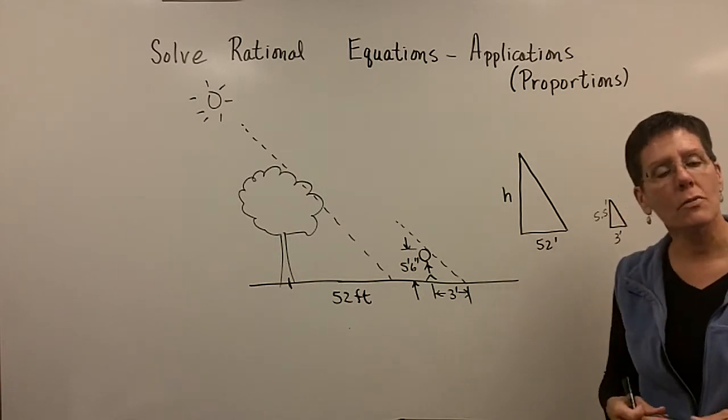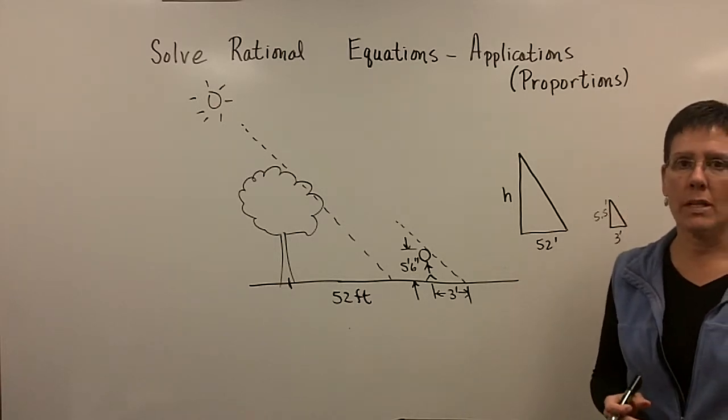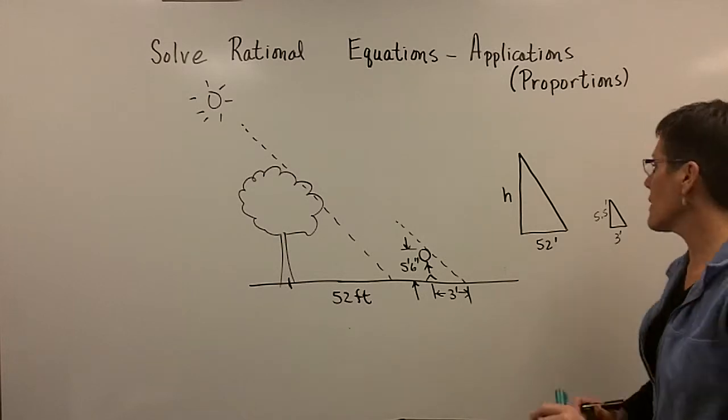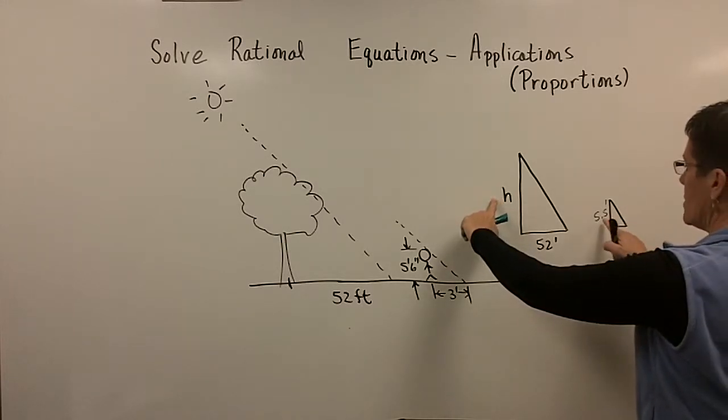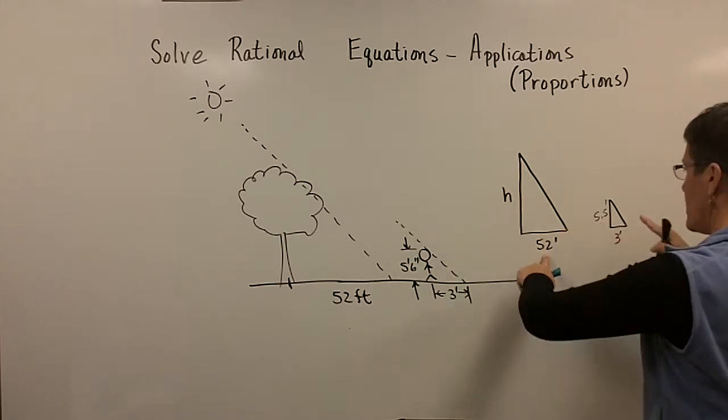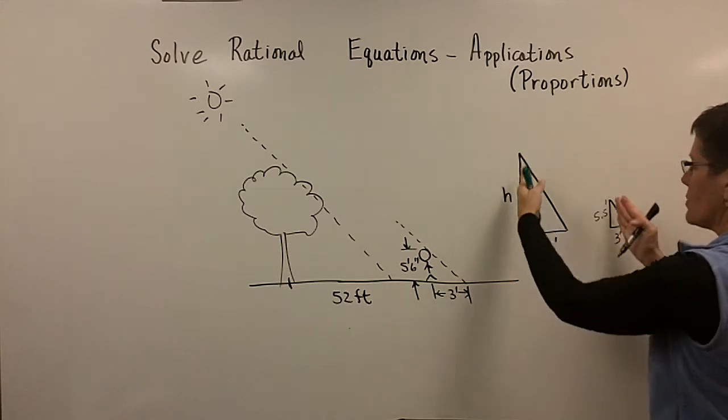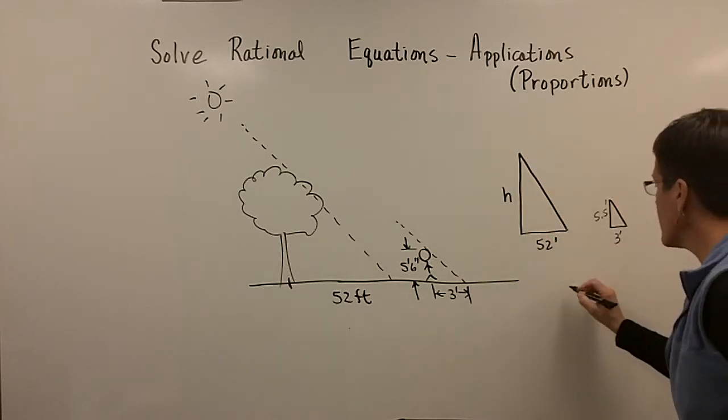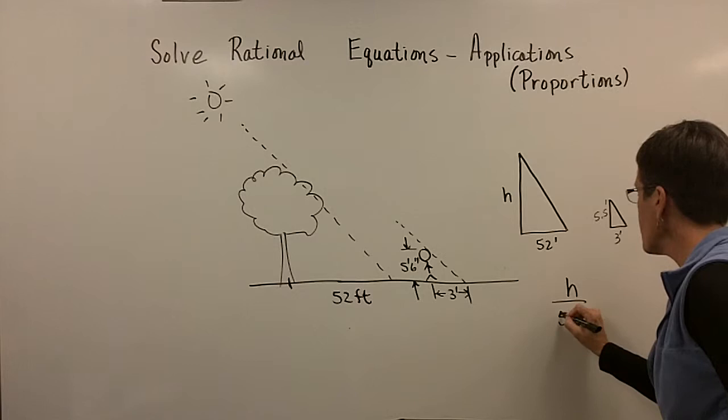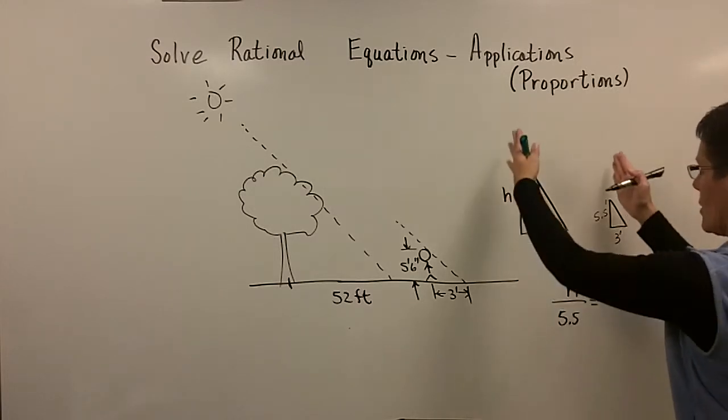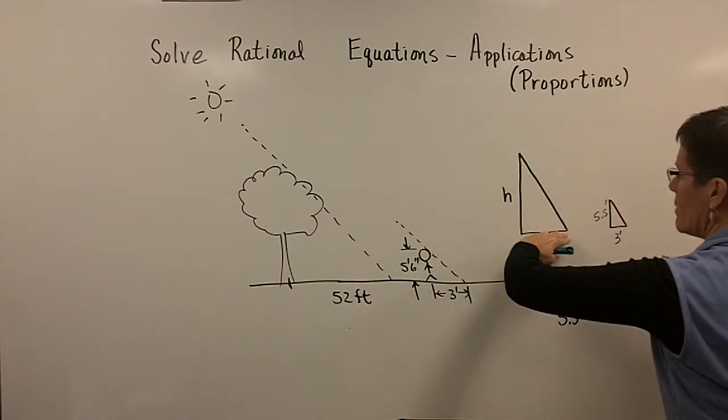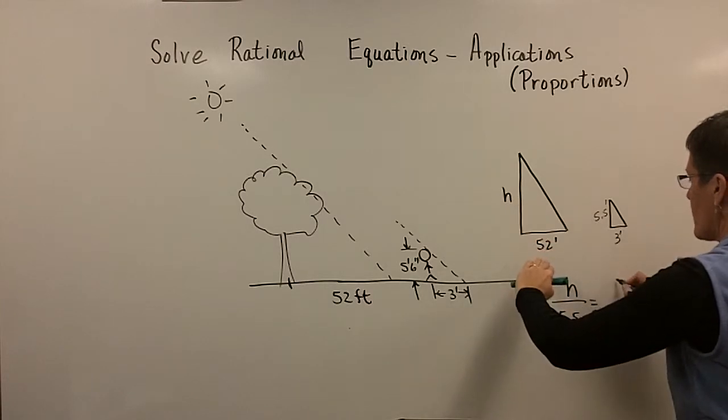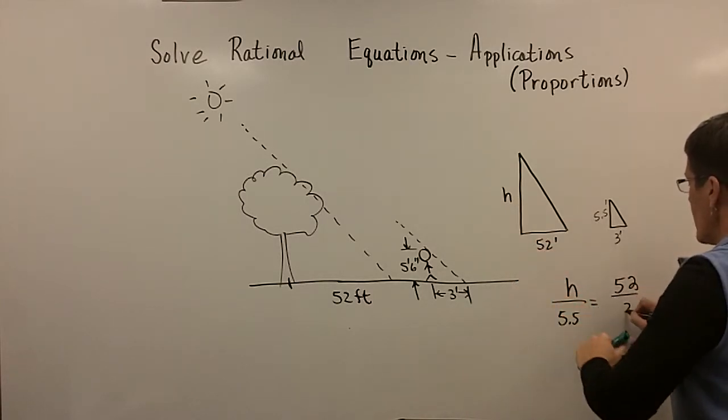These similar triangles, their ratios of corresponding sides could be set equal to one another. There's all kinds of ways to say that. I could say this h is to 5.5 as the 52 is to the 3. So they're tall sides. I could set those h is to 5.5. Then if I went with the big triangle first, then I've got to put the 52 over here and the 3 over there.